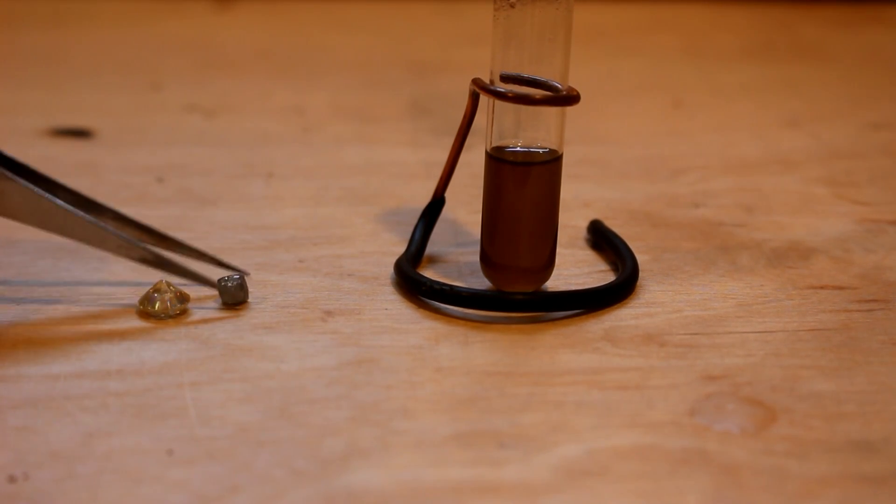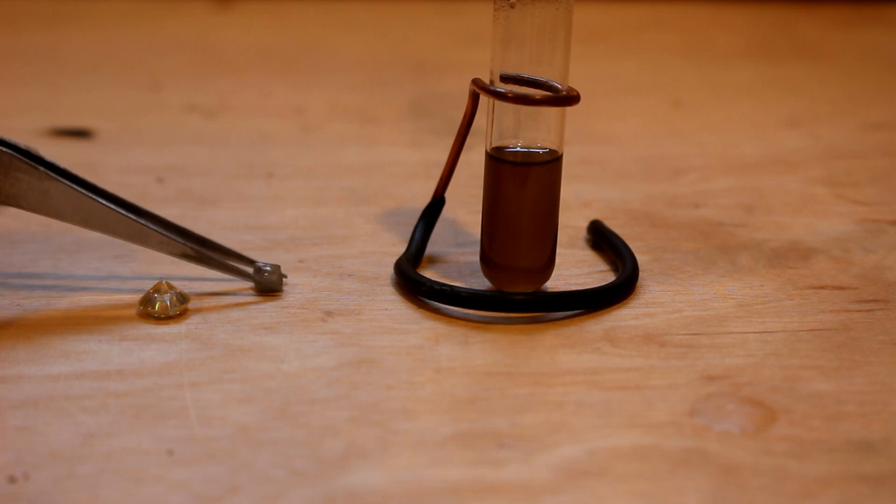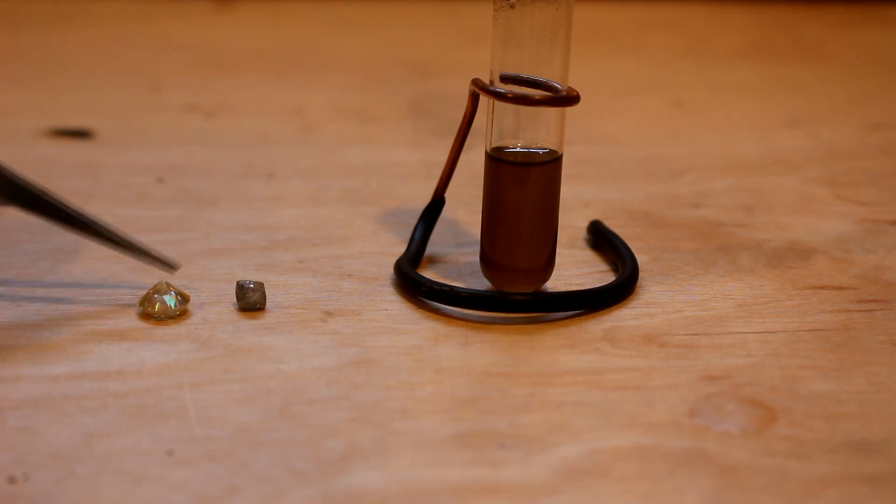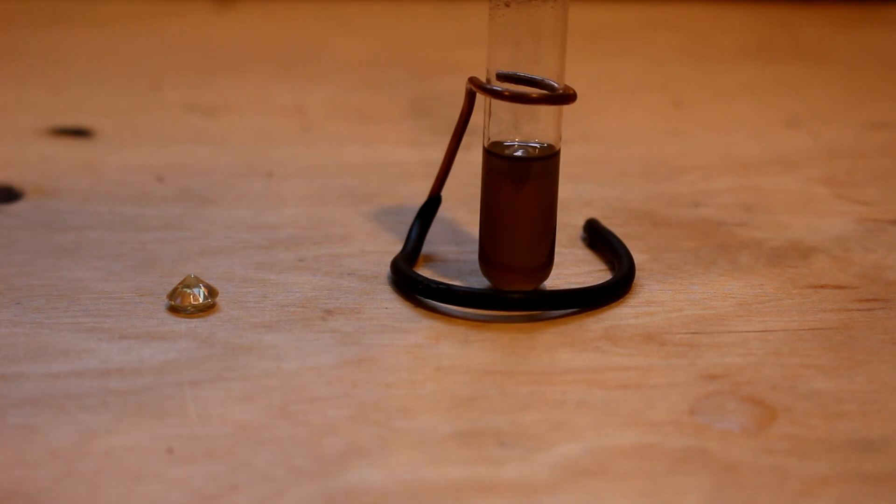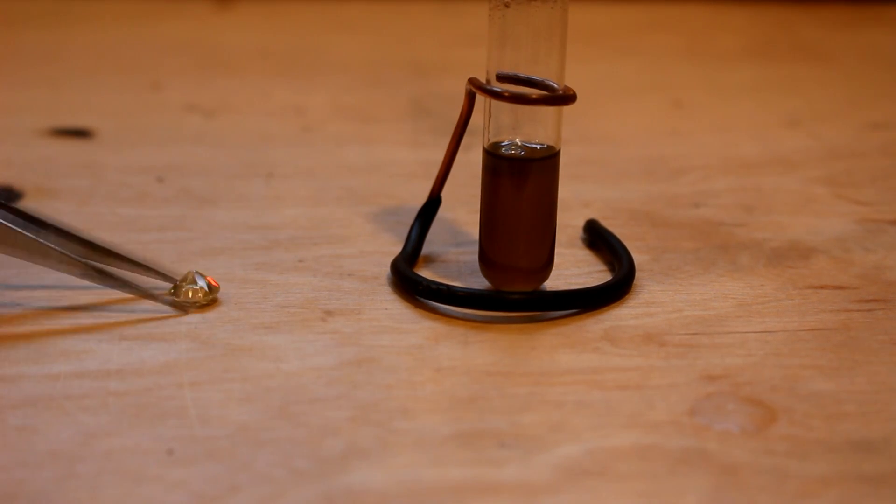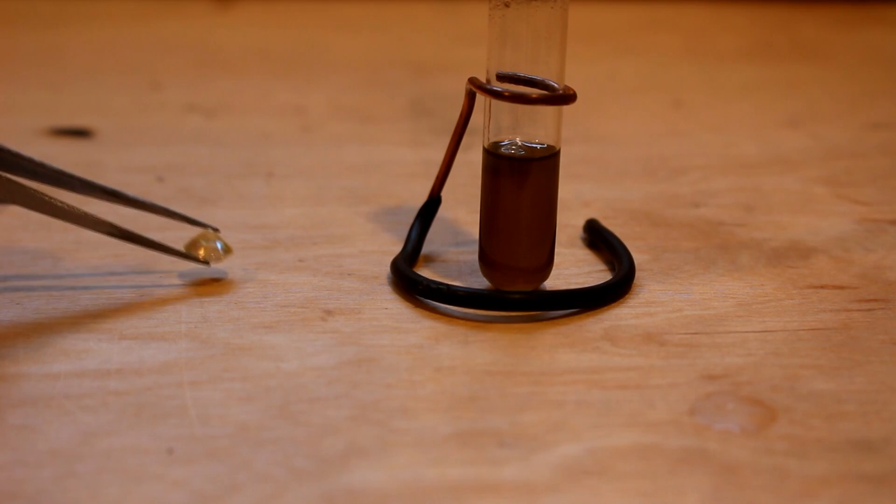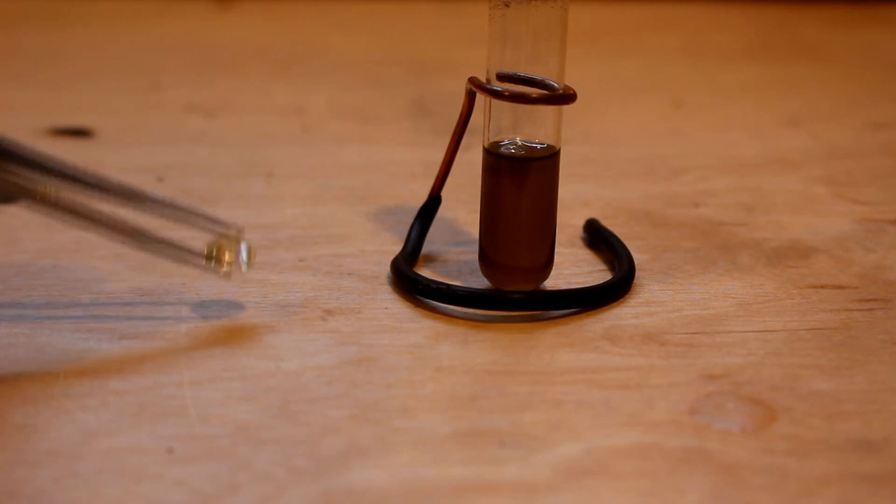Today, though, I'm just going to do a sink or swim analysis to see whether I have diamond or cubic zirconia. Let's put in the diamond. And of course, you guys know that one floats. And now the rock that I suspect to be zirconium dioxide.